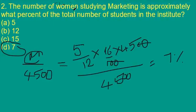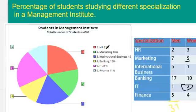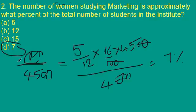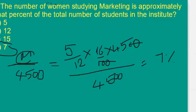Next question: the number of women studying in the marketing department is approximately what percent of total students? Total students is 4500. Women studying in marketing department: the ratio is 5 out of 12, and marketing is 16% of total. So: 5/12 × 16% × 4500, out of 4500. By calculating this we get 7% as the answer. Option D is our answer.